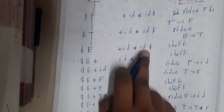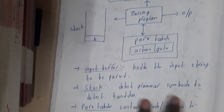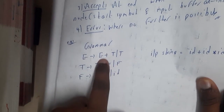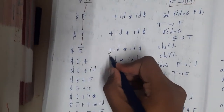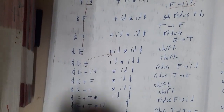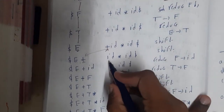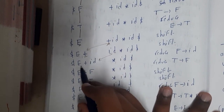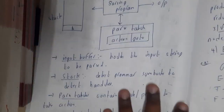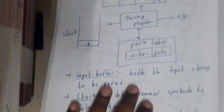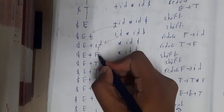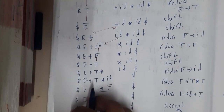Now E is on the stack but E alone doesn't match any full production — we need E+T. So we wait. The next input is plus, so we shift it. Now we have dollar-E-plus. We still need T. So we shift the next id. Now the stack has dollar-E-plus-id, and this id again matches F → id, so we reduce it to F.